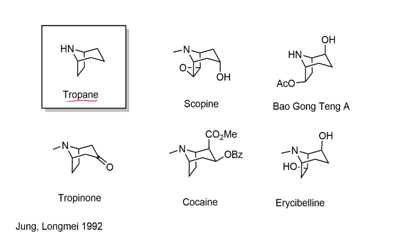Tropane is a bicyclic scaffold that turns up in a lot of natural products. In particular, it's related to tropinone, and Sir Robert Robinson did a very famous synthesis of this in 1917. It's a real landmark in the field of organic synthesis.